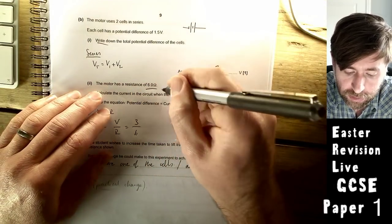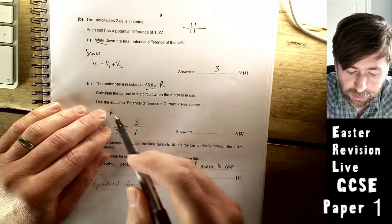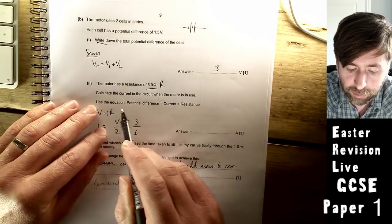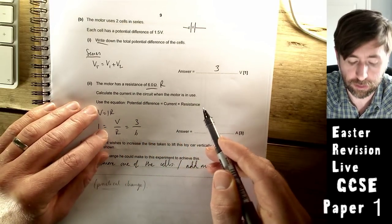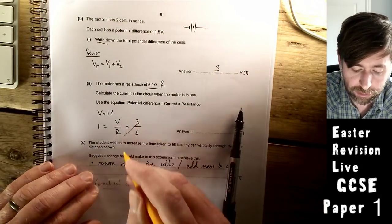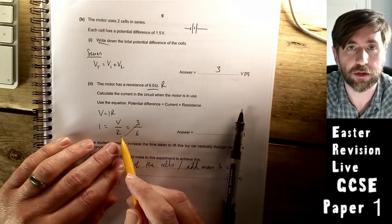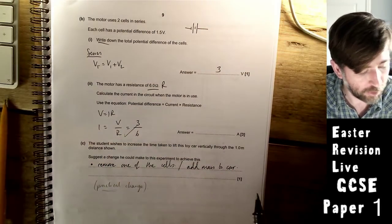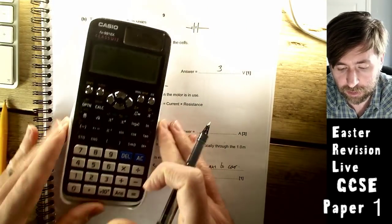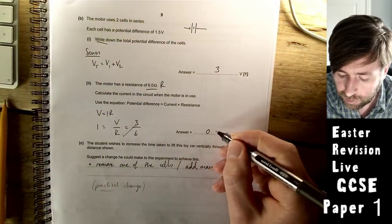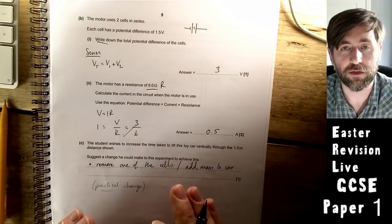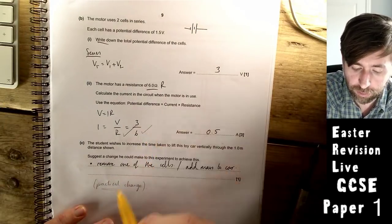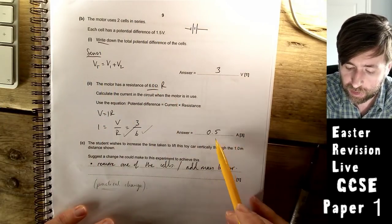The motor has a resistance of six ohms. Calculate the current when it's in use. We know voltage from the previous one. They've given us the equation, so there isn't a mark for recall, but there is a mark for rearranging. Current is voltage over resistance. Three over six, even because we're lazy, we're just going to do that in the calculator, which gives us 0.5. There's a mark for rearranging, getting them in the right place, and for the final answer.